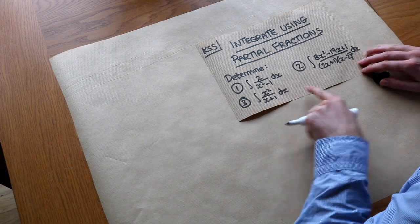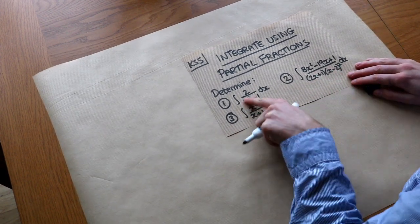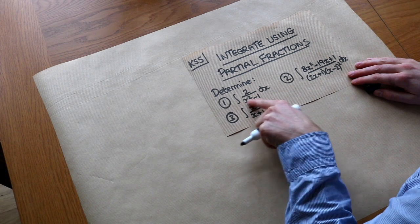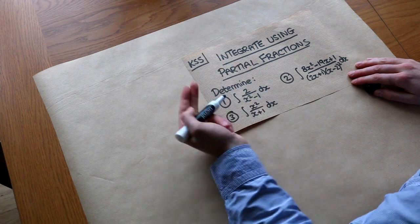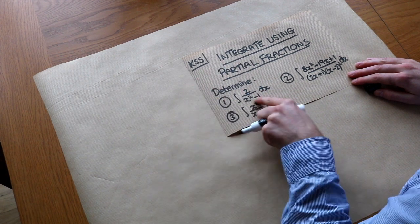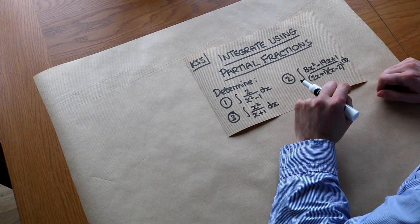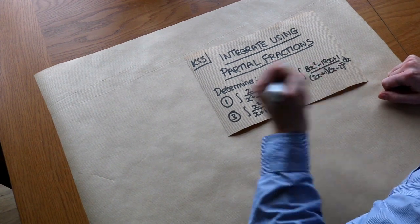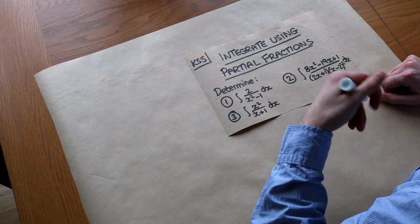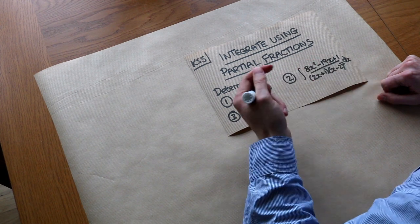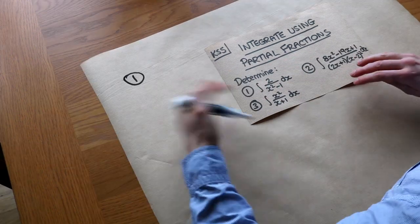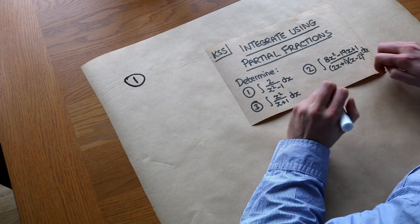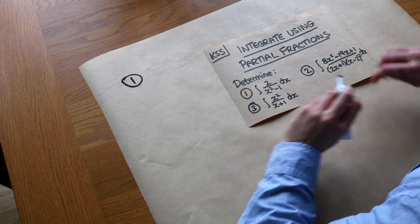In this particular case we can see we have a product in the denominator — that expression can be written as a product of (x+1) and (x-1) because that's the difference of two squares. So always try and spot when the denominator of a fraction you're integrating can be written as a product. As long as you know how to decompose into partial fractions, it's not a particularly difficult method of integration.